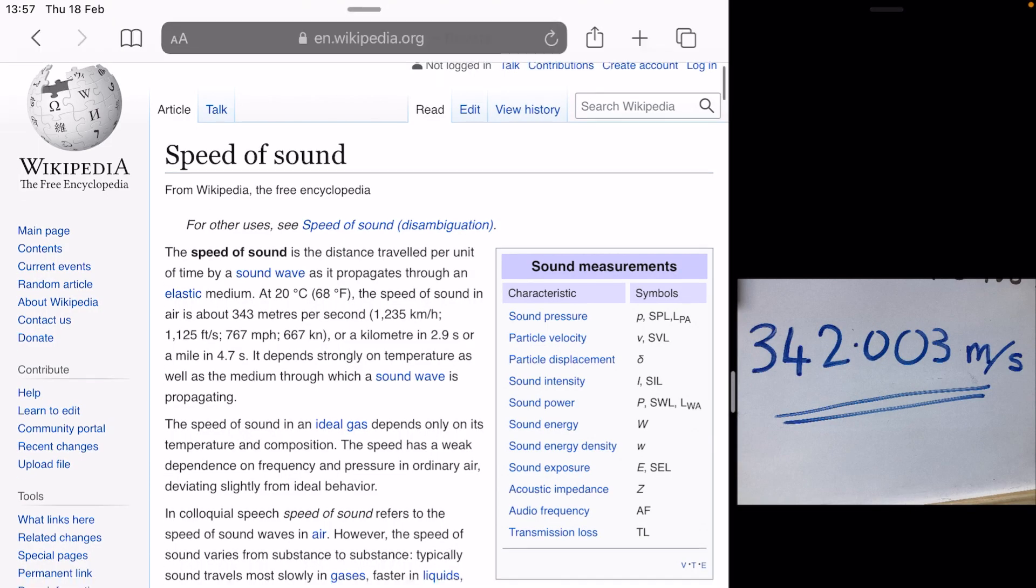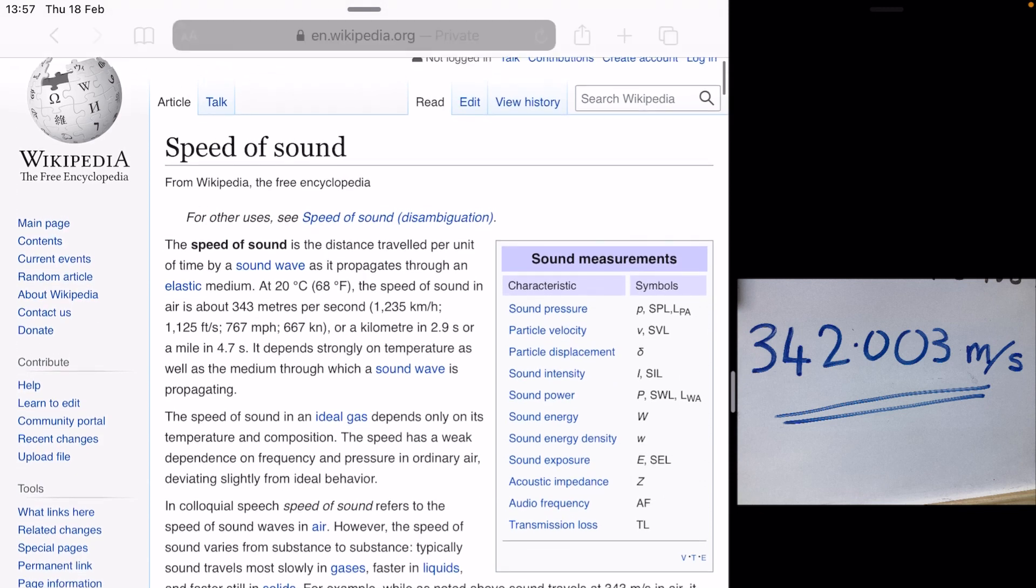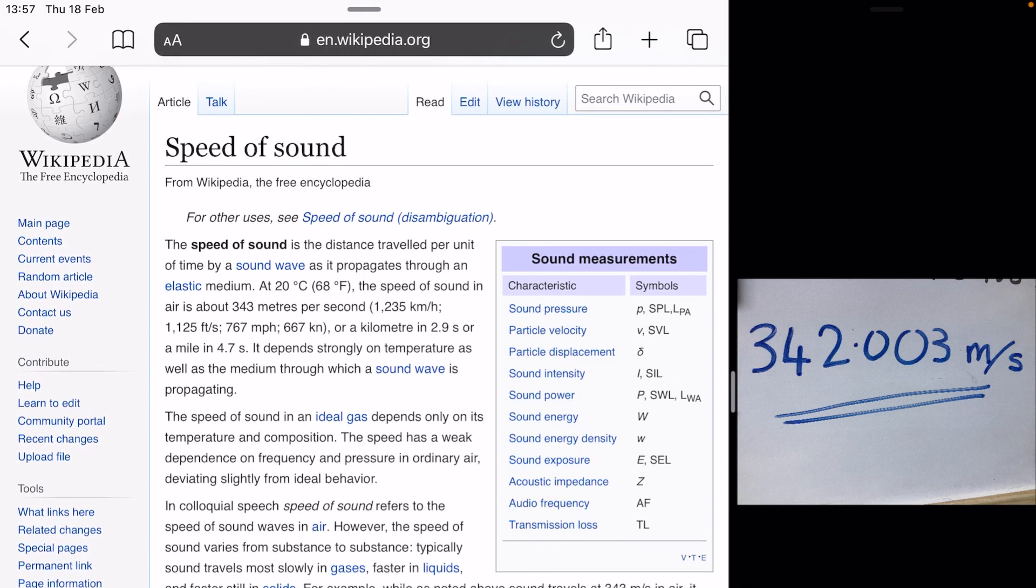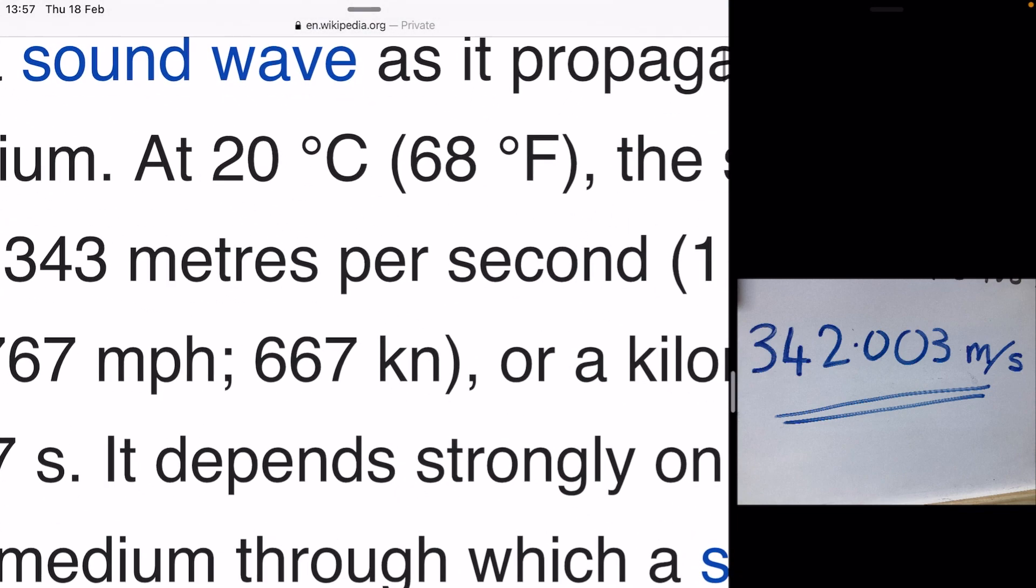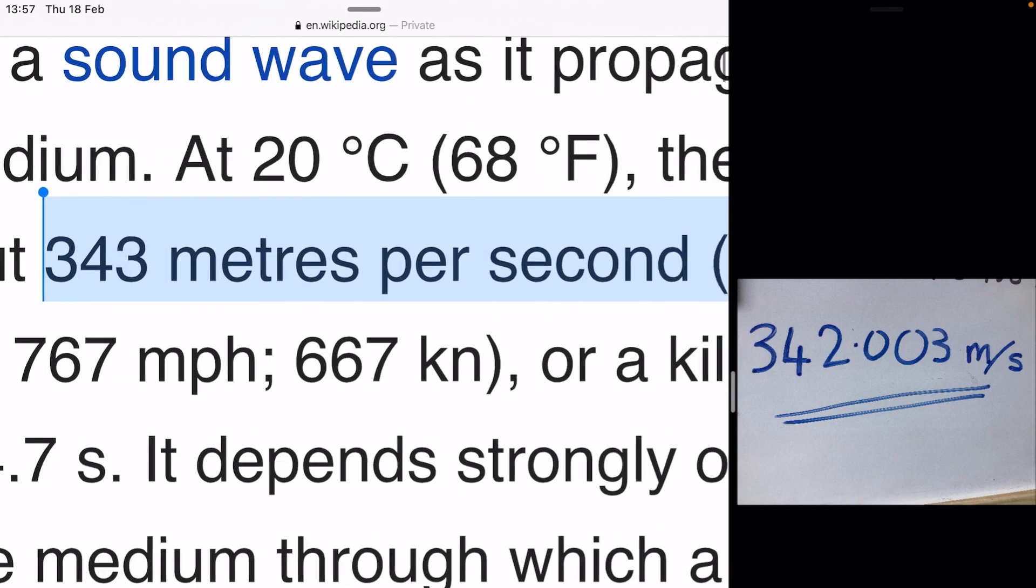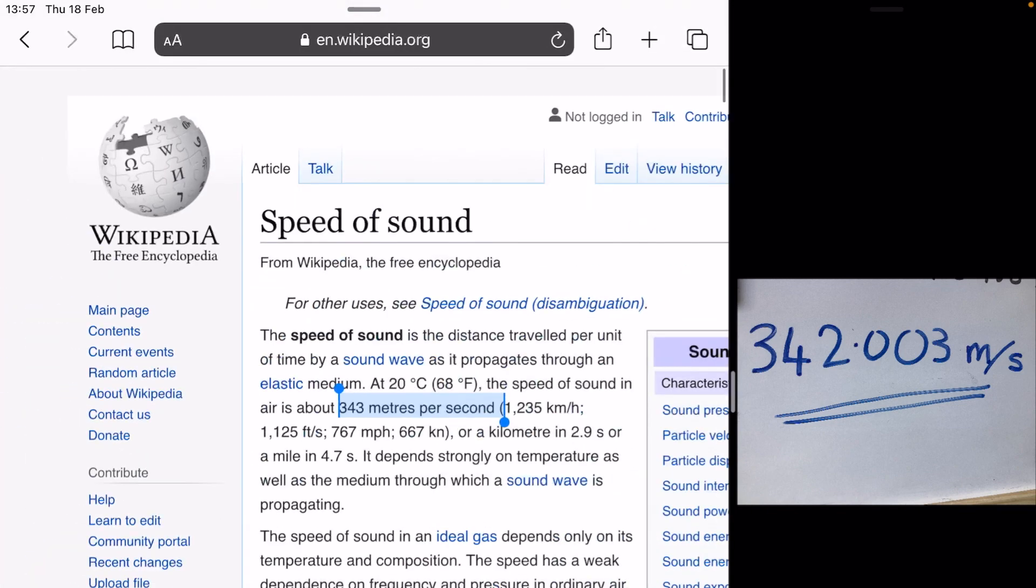Now we've worked out the speed of sound through air in our lounge. Let's see how accurate our results are. I've just gone to Wikipedia and searched for the speed of sound, and on the right-hand side we have the speed of sound in my lounge, which we've just worked out. And let's compare. So straight away we can see that the speed of sound is approximately 343 metres per second. So we're pretty close straight off.